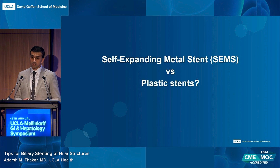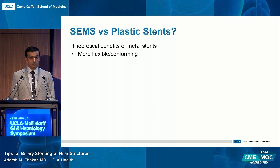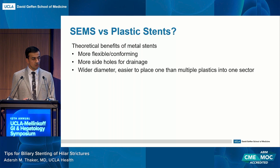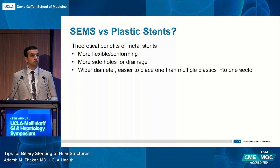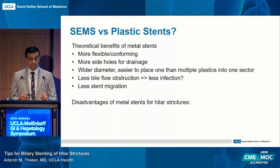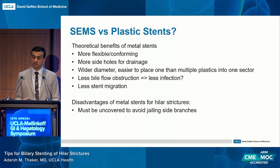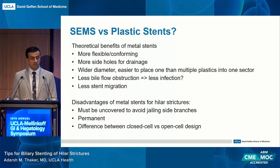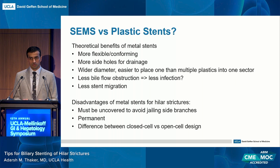Turning to what type of stent to use — metal or plastic. The theoretical benefits of metal stents are that they're more flexible and conforming, with more side holes for drainage. Their wider diameter — typically 8 or 10 millimeters — makes them generally easier to place than shoving multiple plastic stents into one sector. Because they're wider, there's potentially less bile flow obstruction, less future cholangitis, and less stent migration. The disadvantage is these stents must be uncovered — you can't put a covered stent across the hilum because you'd jail off side branches. These are uncovered and therefore permanent. It's important to know whether you're using a closed cell design, which foreshortens as it expands, or an open cell design, as this affects how you place those stents.